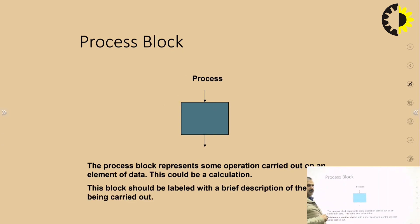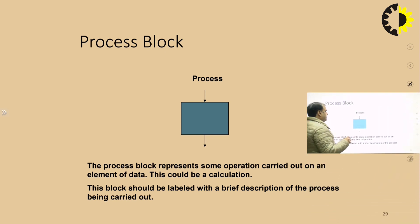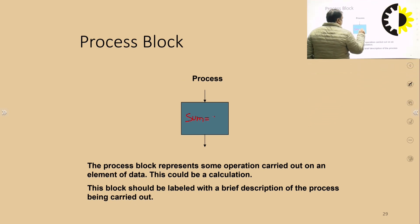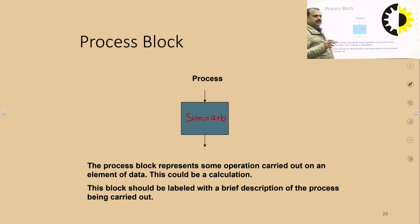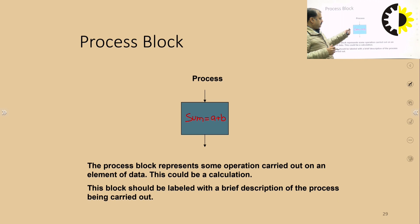The process block is where we perform some kind of calculation. It should be labeled with a brief description of the process. For example, we can write 'sum = a + b', where we compute the addition of two values a and b and store the result into a variable called sum. This computation part is represented inside the rectangle symbol.